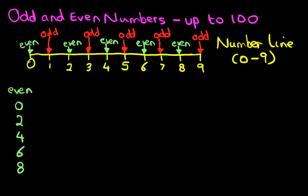Now how about the odd numbers? One, three, five, seven, and nine. So those are all the odd and the even numbers.